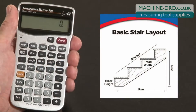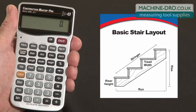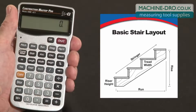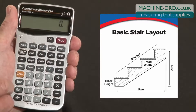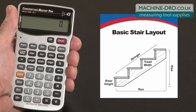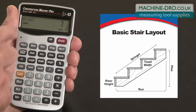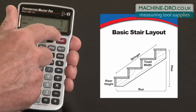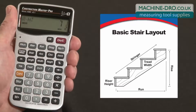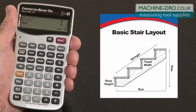Let me show you how to calculate basic stair layouts using the Construction Master Pro. Keep in mind that the keystrokes will be exactly the same if you're using the trig model or the desktop model. This stair function can save hours of frustrating calculations and stair table lookups. The calculator uses a 7.5 inch target riser height as the default — if I hit Recall 7, it shows riser height stored is 7.5 inches. You can change that, but for this example we'll leave it alone.